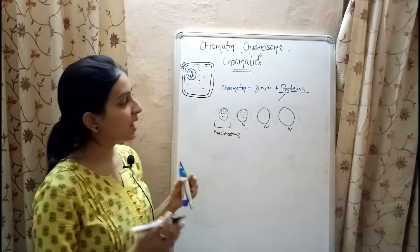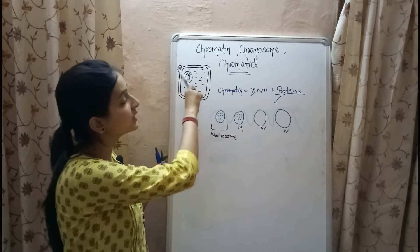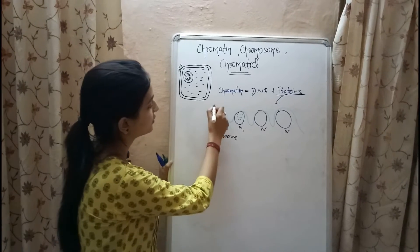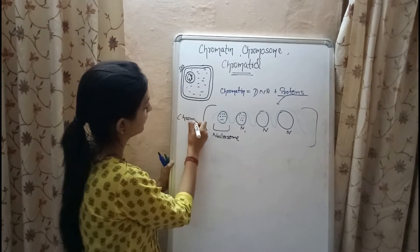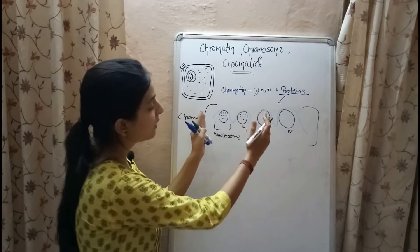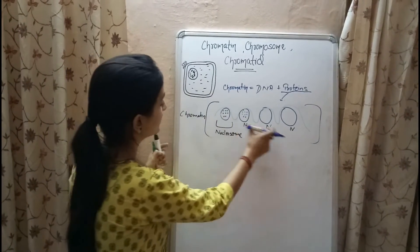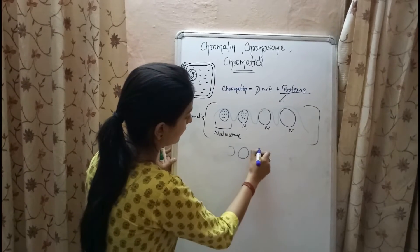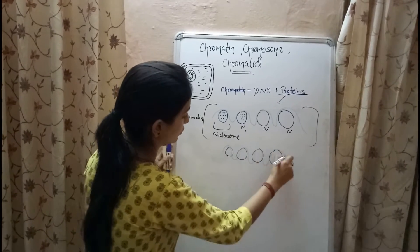So to summarize, chromatin are the complex macromolecules present inside the nucleus of a cell, consisting of DNA and histone proteins. During cell division, the chromatin gets thickened and condensed to form a chromosome.